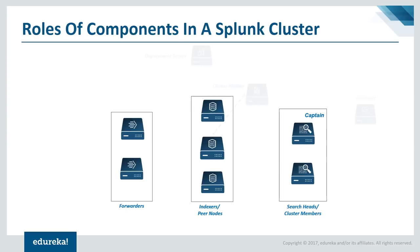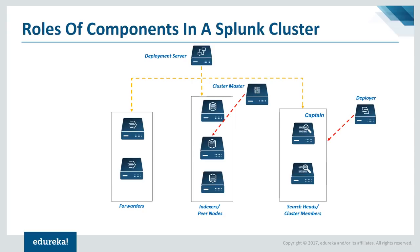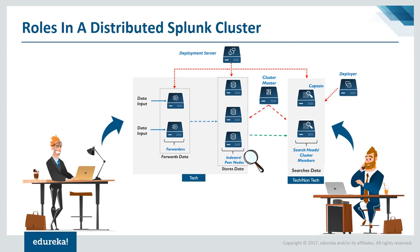Apart from these, we have the other advanced components: deployer, cluster master, and deployment server. Just for recap — the deployment server gives configuration and app updates to forwarder, indexer, and search head. The deployer sends configuration and app updates only to the search head. The cluster master is responsible for all the configuration and app updates inside the indexer. As you can see on the slide, the forwarder and the indexer are designed to be used by the technical team — a system engineer or system admin. While the search head is designed to be used by both technical and non-technical users; it can be used by an analyst to create visualizations and reports.